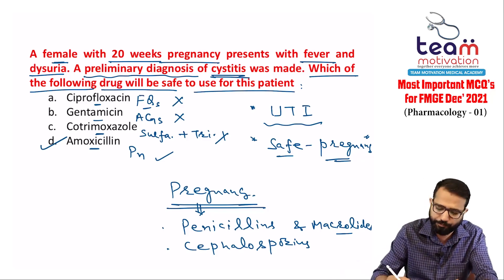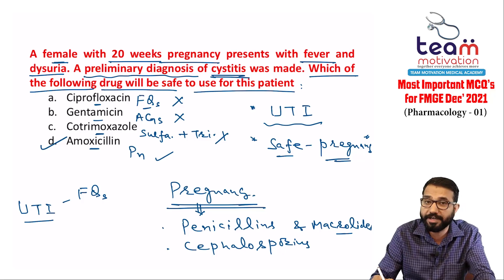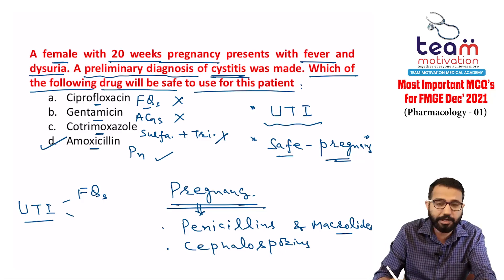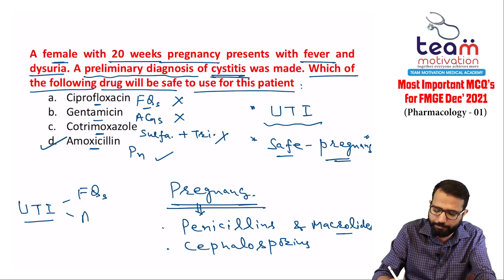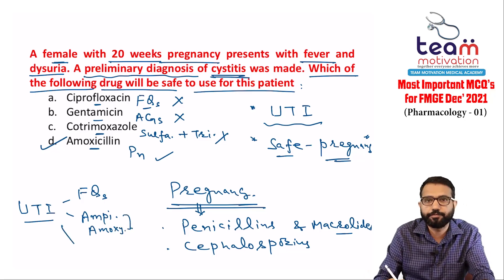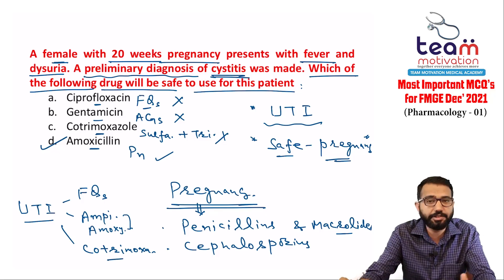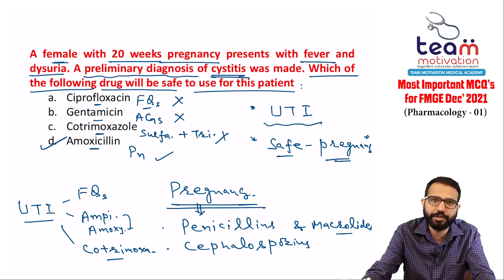In UTI: the overall preferred drug nowadays is fluoroquinolone, but not to be used in children or during pregnancy and lactation. In pregnancy, use ampicillin or amoxicillin. In children, use cotrimoxazole. Overall best is fluoroquinolone, but for pregnancy/lactation prefer ampicillin/amoxicillin, and for children use cotrimoxazole.